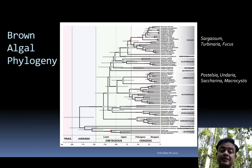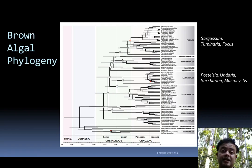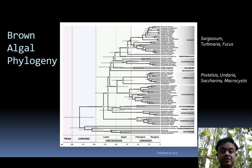Ectocarpales is another group — Ectocarpus belongs to this group — and Ectocarpales includes a large number of other brown seaweeds as well, some of which are economically important. Padina also belongs to Ectocarpales. Padina is a calcareous alga, the only calcareous encrusting alga among brown algae, which has got typical silicate and calcium carbonate deposits on its cell wall. That is why it looks a little bit thicker — corticated cells.